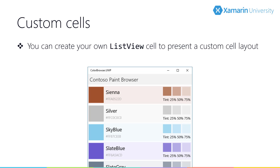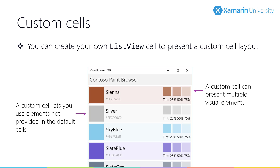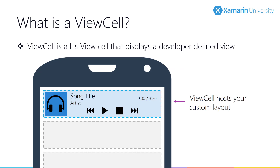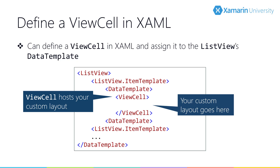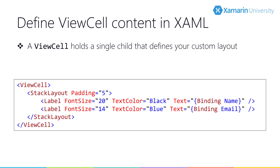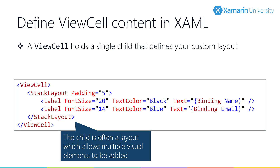Those default cell styles are great, but sometimes out of the box isn't quite sufficient. Look at this ListView using three different text fields and box views to show paint colors — this layout can't be achieved with the default cell styles. To create custom visualizations in the ListView cell, we use a view cell. A view cell allows us to define the visual elements and layout, assigned as a data template, hosting our custom layout using a stack layout.